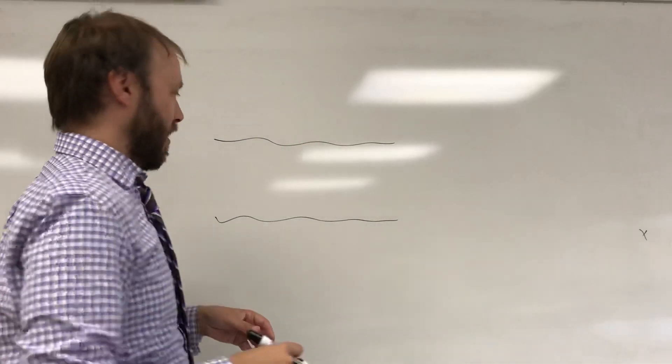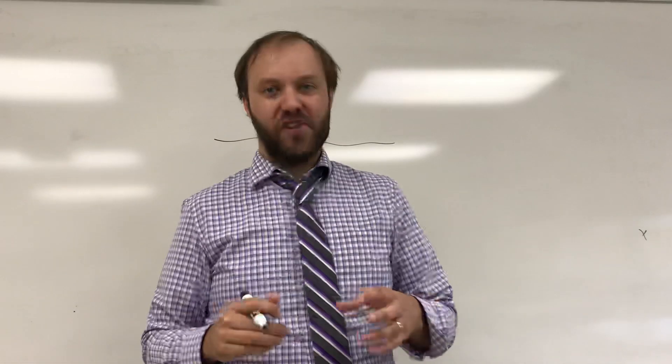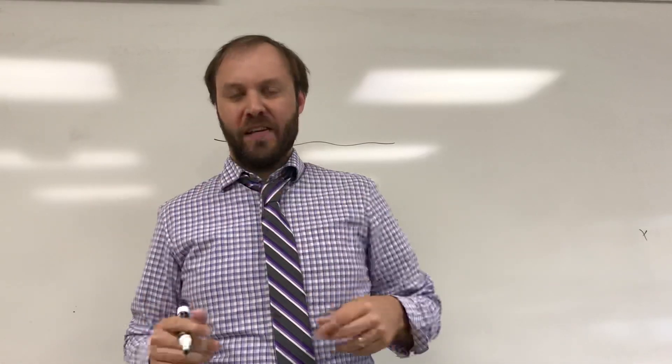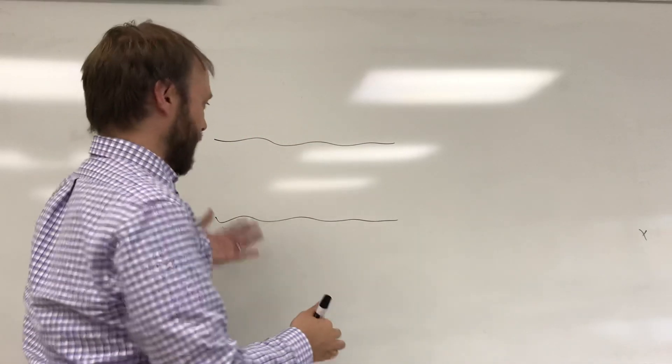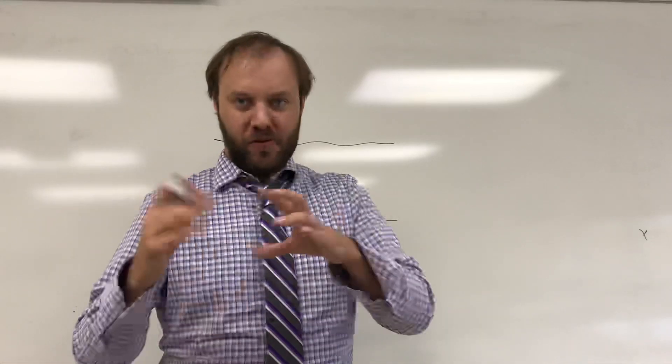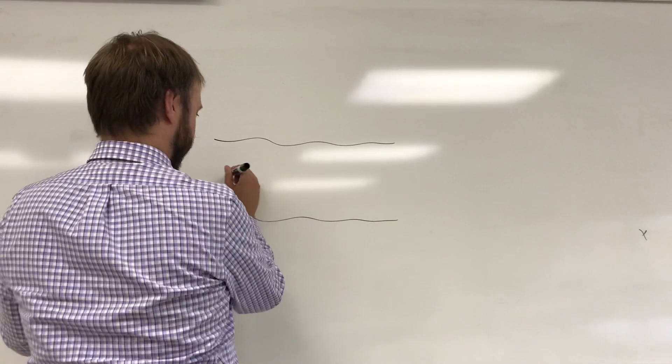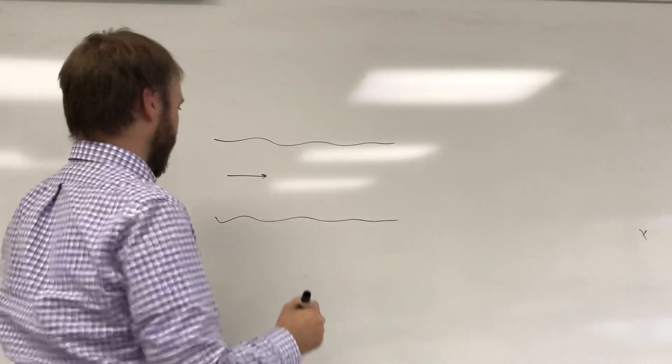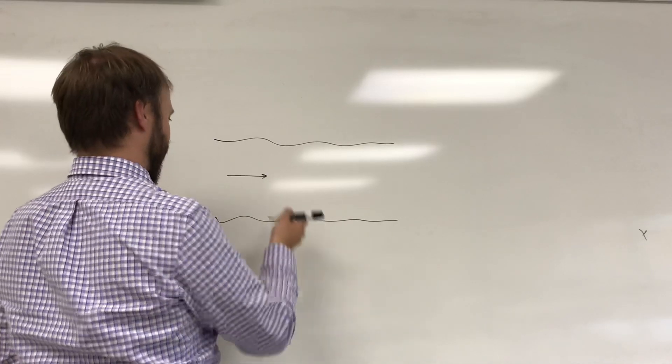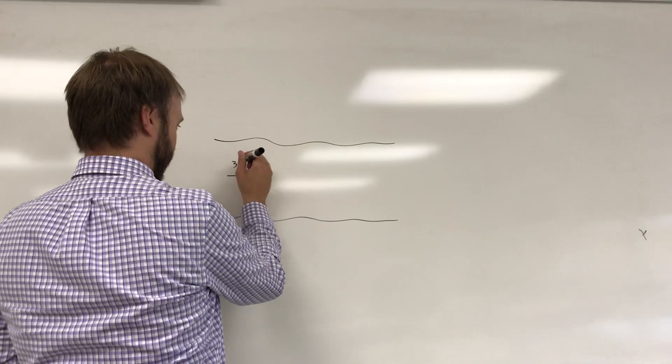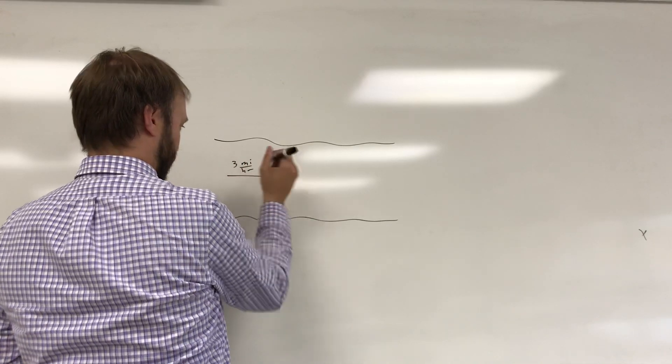A classic kind of problem that you'll see are problems where you have some kind of motion happening in one direction, some other motion happening in some other direction. For example, the river problems. You'll see this with air currents or maybe water currents. Maybe you have a river that is flowing to the east. Let's say it's flowing to the east at three miles per hour.